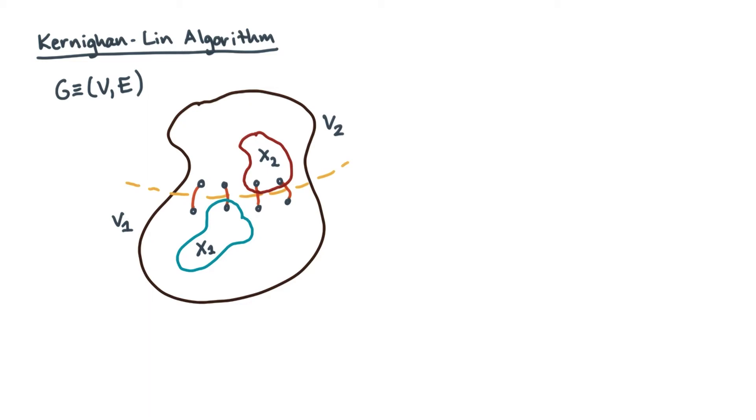By now, you should have gained everything you need to know to understand the full Kernighan-Lin algorithm. Recall the setup. You're given a graph and a partition of its vertices, v1 and v2.